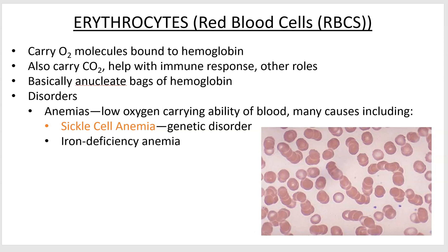Sickle cell anemia is a genetic disorder more common in people of African descent. The reason is that malaria historically has been a real problem in tropical and subtropical areas. If you have one allele for the sickle cell trait and one non-sickle cell allele, you're more resistant to malaria — that's why it's kept at a higher rate. It doesn't help here in the United States where there's little malaria, but it was useful in Africa. Iron deficiency anemia tends to be more common in women due to menstruation — you lose iron when you lose blood, and without iron you can't build hemoglobin correctly, so you can't carry oxygen.